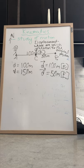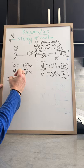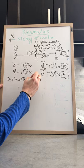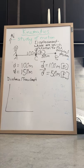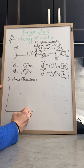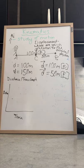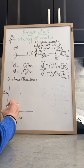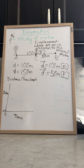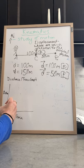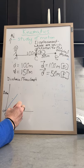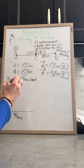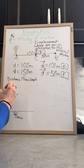Now let's graph this motion. First, a distance-time graph. Time always goes on the bottom axis, and distance goes on the y-axis. Let's say I walked from point A to point B — 100 meters — in 20 seconds. That gives us our first point: 100 meters at 20 seconds.